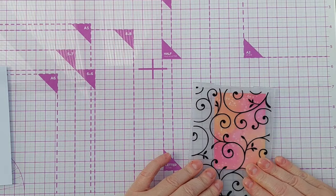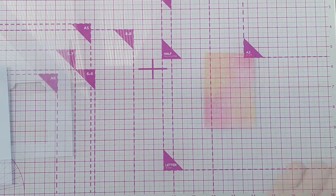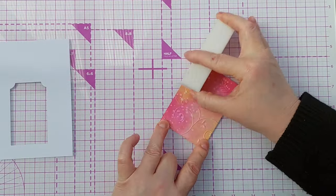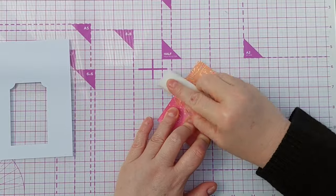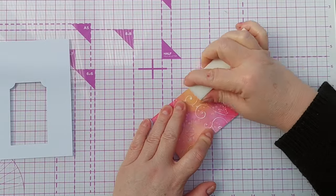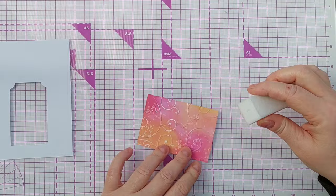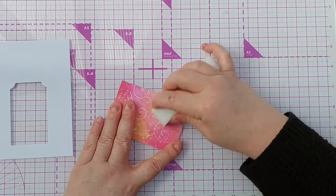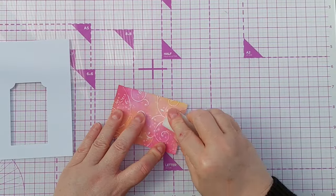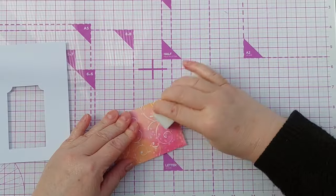Next I ran the cardstock through my Cuttlebug with a Swirly Whirly embossing folder. And after that I took a nail buffer and scrubbed off the color from the raised portions of the embossed card. This is a lovely technique for bringing out the pattern of an embossing folder.